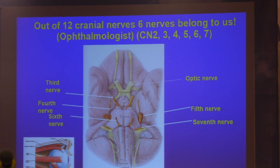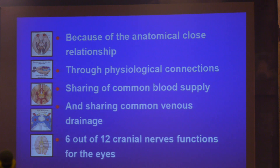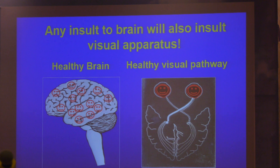If you know all the important structures at the base of the brain, you will not go wrong in any localizing value. To sum up: anatomically, physiologically, through blood supply, through venous drainage, through the cranial nerves — if you know all six points, you can work comfortably in your neuro-ophthalmic practice.